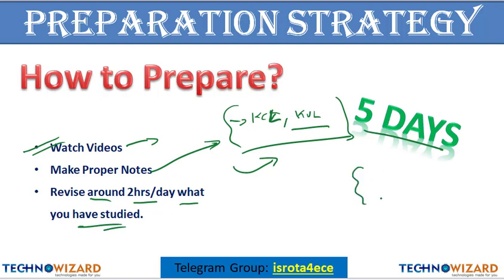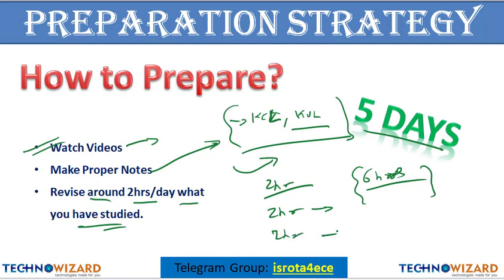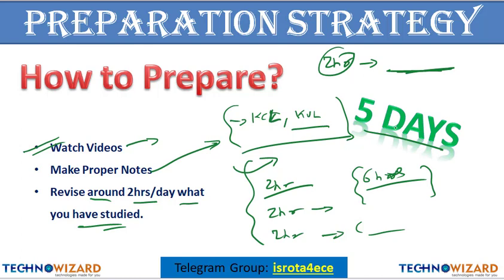Suppose you have studied six hours — two hours for network theory, two hours for analog electronics, and two hours for communication system. Then two hours should be for your daily revision so that you don't forget each and every formula. If you forget a formula, please refer to the Made Easy Handbook of Electronics Engineering, where you can find every formula and easily solve questions without searching through a full book.